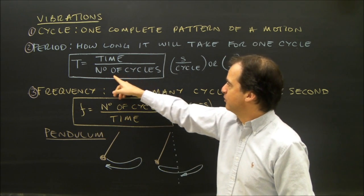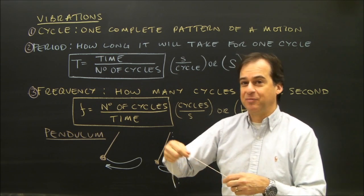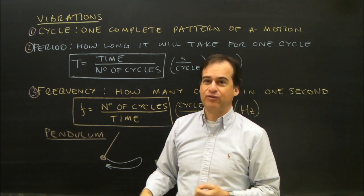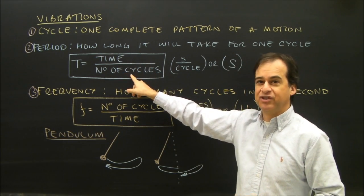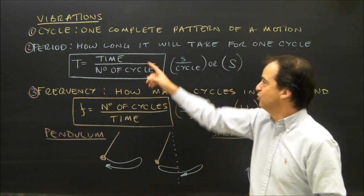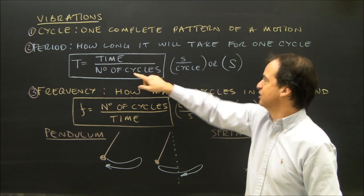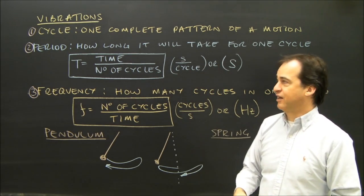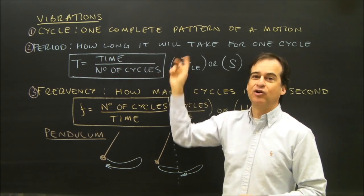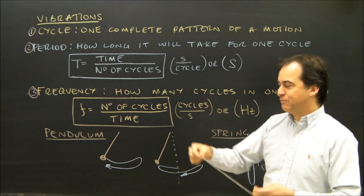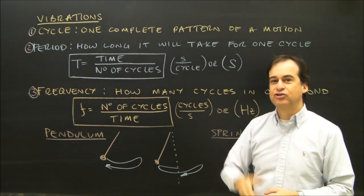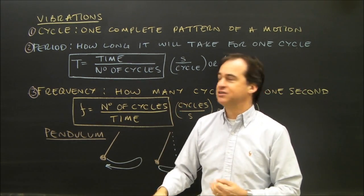and figuring out the time. I timed this - let's say it took me ten seconds to go back and forth five times. So, I take the time divided by the number of cycles. Ten divided by five gives me two. The units are going to be seconds per cycle. We just use basically seconds. The symbol for period is T because it's mostly interested in time. It's how long it will take for one cycle. So, if it was ten seconds to go back and forth five times, then it took two seconds to go back and forth once. That's its period.